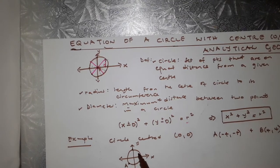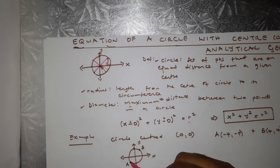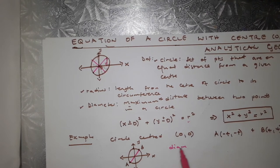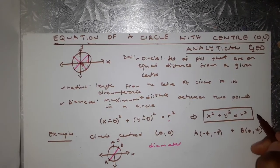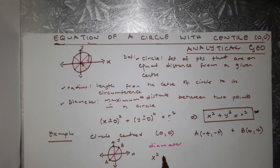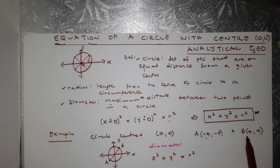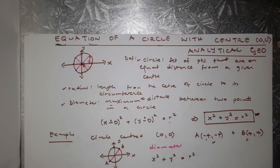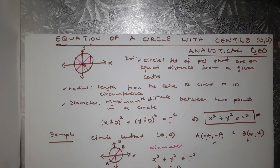Point B (4, 4) is up here. If we draw a line between A and B, that line is going to be the diameter. To determine the equation of this circle, we use x² + y² = r², so we are looking for r. We have two coordinates, and we can substitute either point — let's substitute point A: (−4)² + (−4)² = r².